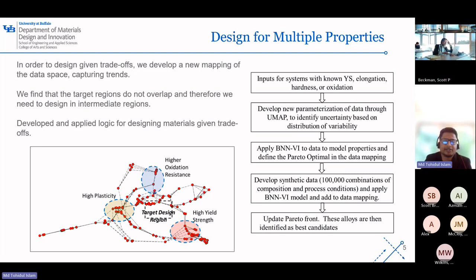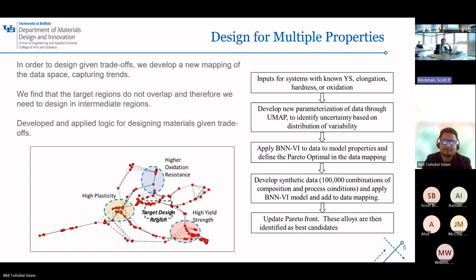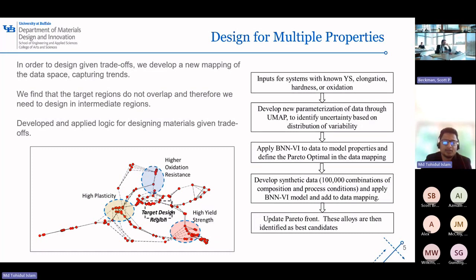This is our approach to design materials with multiple properties. We have mapped out the data in graph format, as you can see in the bottom left corner, capturing the trends and seeing where our desired properties intersect. We can see that they don't, which means we need to be clever and design in the space in between. So we introduced a process flow starting with the known system. We are using UMAP, a sophisticated data analysis tool, to get new perspectives, and finally we generate synthetic data.